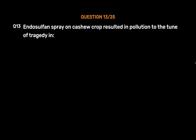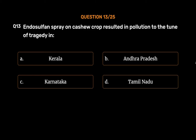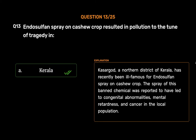Question No. 13. Endosulfan spray on Kashu crop resulted in pollution and tragedy in: Option A. Kerala. Option B. Andhra Pradesh. Option C. Karnataka. Option D. Tamil Nadu. The correct answer is Option A, Kerala. Kasaragod, a northern district of Kerala, has been ill-famous for endosulfan spray on Kashu crop. The spray of this banned chemical was reported to have led to congenital abnormalities, mental retardation, and cancer in the local population.